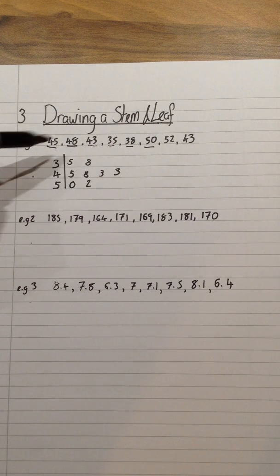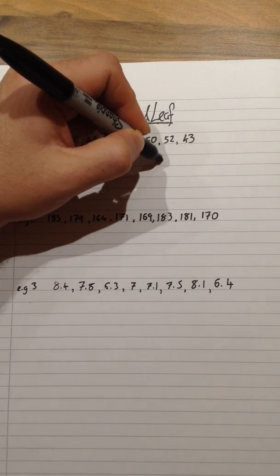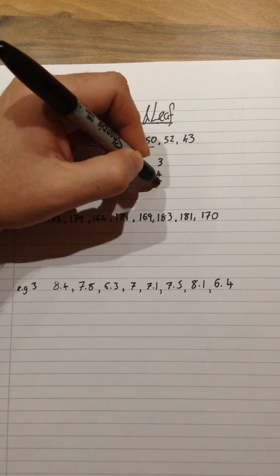As a mathematician, there's something that I don't like about this diagram. And it's the fact that each row is not in order. This is known as an unordered stem and leaf. I'm going to repeat this process now, but putting each row in order.